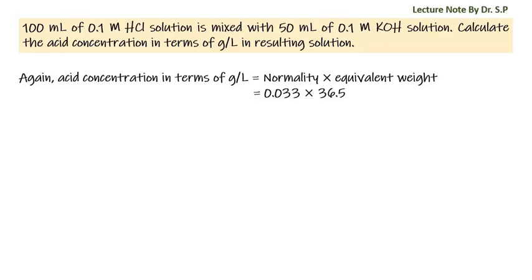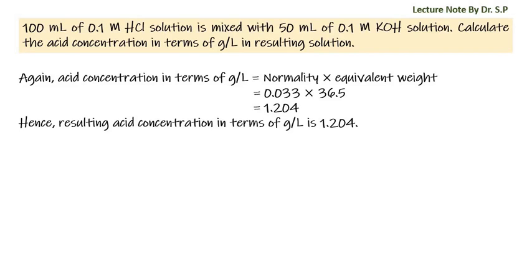That is equal to 0.033 into 36.5 — where the resulting normality is 0.033 and the equivalent weight of hydrochloric acid is 36.5 — giving 1.204. Hence the resulting acid concentration is 1.204 grams per liter.